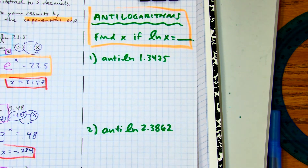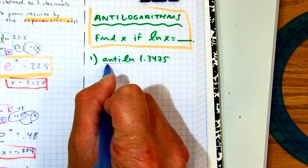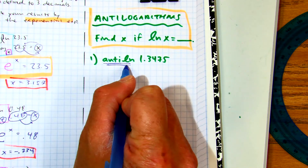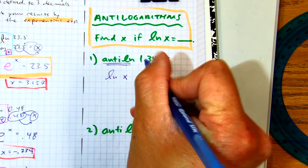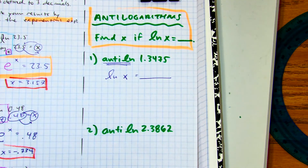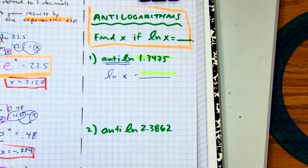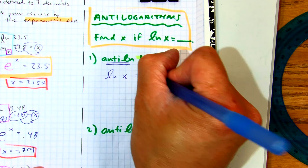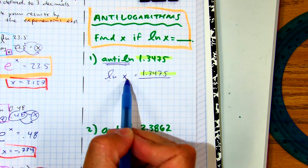Let's go ahead and try that. Two examples here. So instead of writing the anti-log, we're basically saying ln of x equals blank. What do I put in this blank? 1.3475. So we're trying to find a number — natural log of x equals this is our answer.